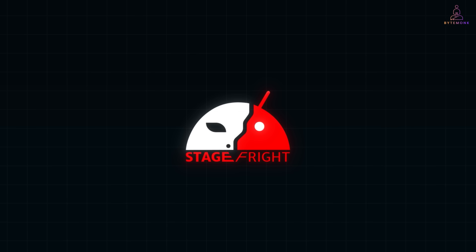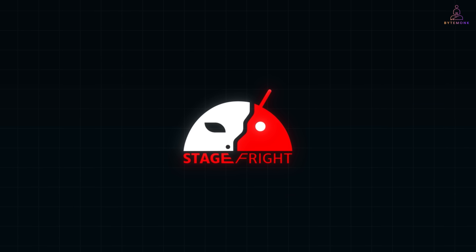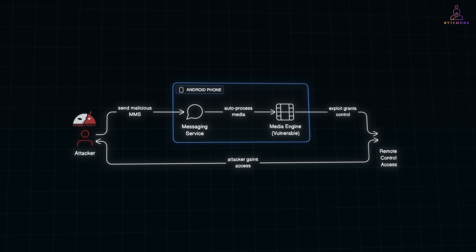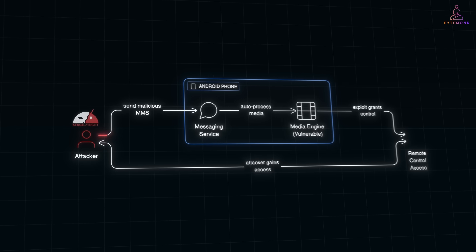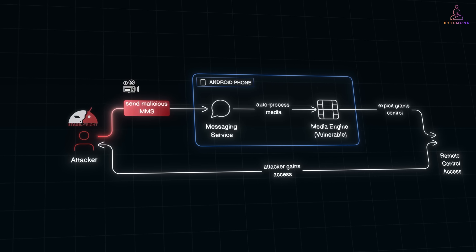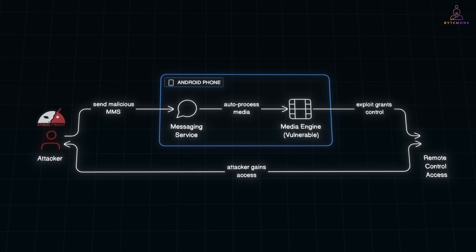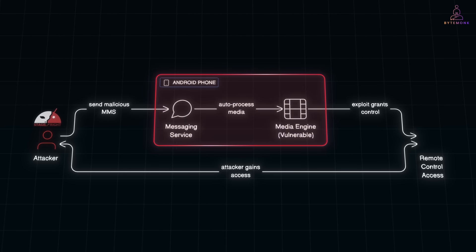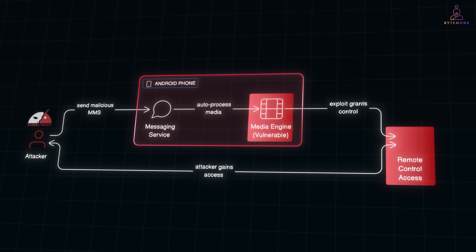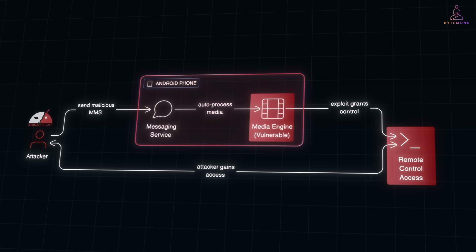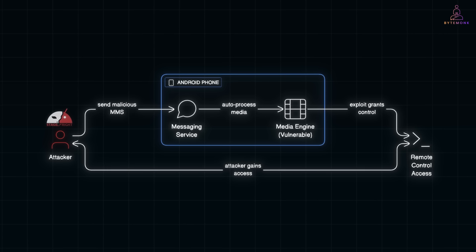Back in 2015, there was a bug in Android phones called StageFright. All it took was a single MMS — maybe a video or a message — and before you even opened it, your phone's media system started processing it automatically. Hidden inside that message was code that exploited a flaw in Android's media engine, giving hackers remote control. You didn't click. You didn't even see it coming.